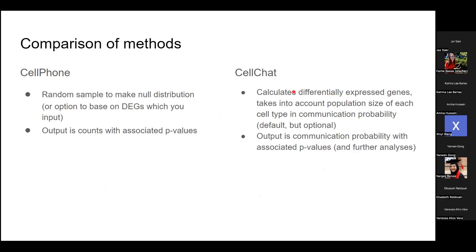A quick comparison of CellPhone versus CellChat methods: CellPhone uses random shuffling — or in the new version, differentially expressed genes — to make a null distribution. The output is counts of interactions with associated p-values, so it's more binary — not really a strength measure. CellChat instead calculates communication probability with associated p-values, plus a lot of further analysis.